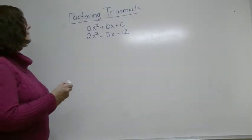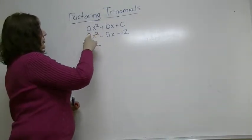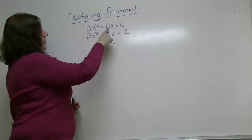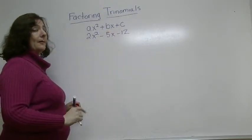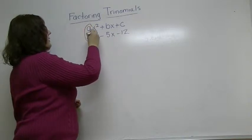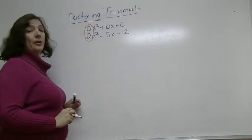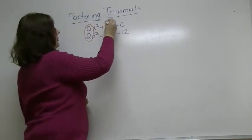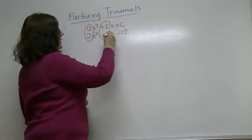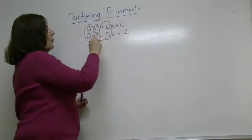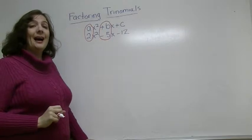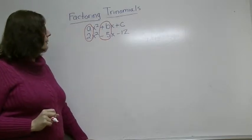The first step is to realize what your A, your B, and your C term are. The A term is the number that sits in front of the x squared term. The B term is what sits in front of the x.